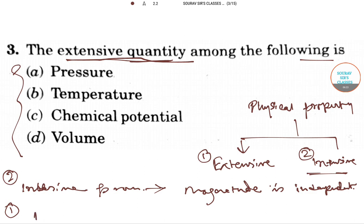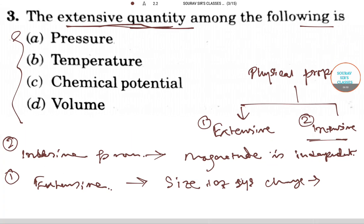And in case of extensive property, what happens is that property changes when the size of the system changes - that leads to change of property.